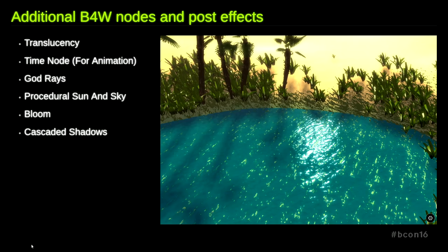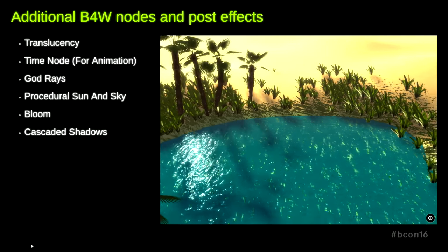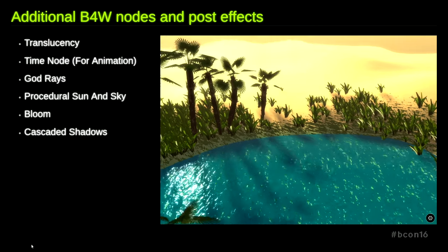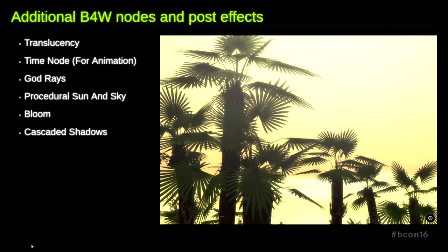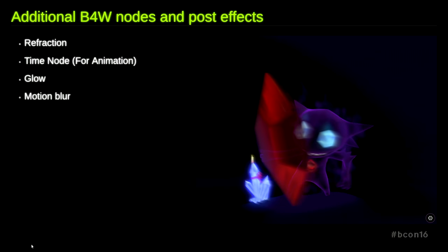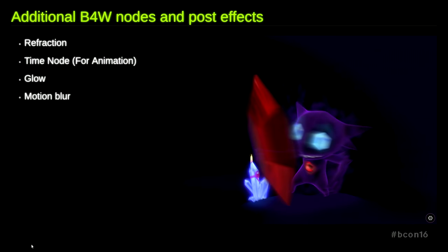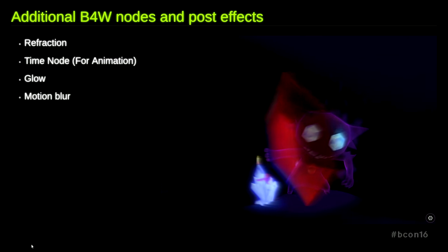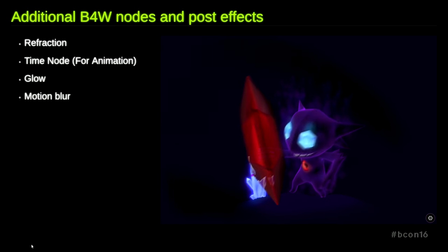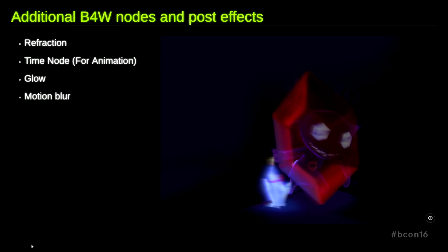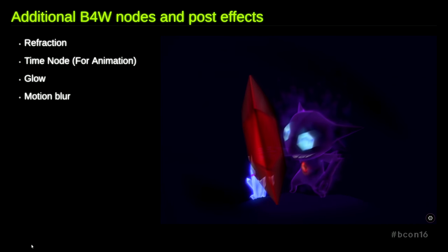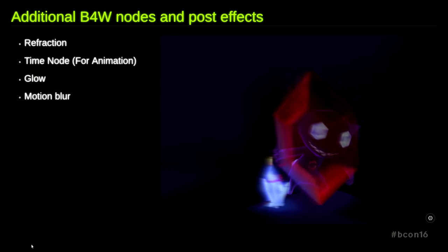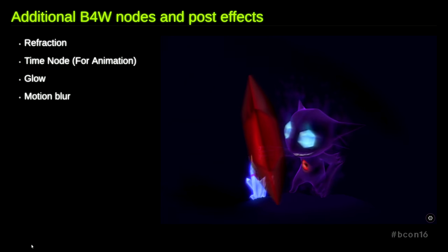You can also see bloom on the water. You can see an animated texture on the water, you can see soft shadows. The next example is a Pokémon demo. This Pokémon demo was released before the game Pokémon GO became so popular, and it was made by our artist who is a big fan of Pokémon. Here you can see reflections caused by a red crystal, glow on the crystals, animated steam around the character, and also motion blur.